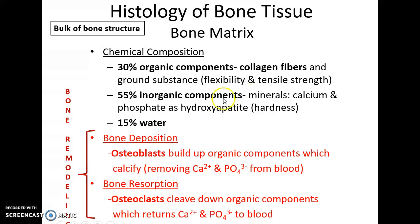Bone tissue is constantly being broken down and built back up. Bone deposition is when osteoblasts build up the organic material, which becomes calcified, removing calcium and phosphate from the bloodstream. Bone resorption is when osteoclasts cleave the organic components, returning calcium and phosphate to the bloodstream. These two processes are constantly occurring and are collectively referred to as bone remodeling.